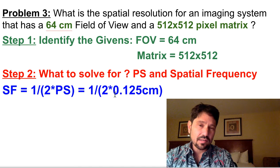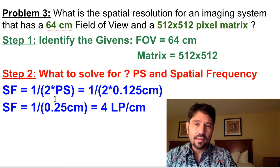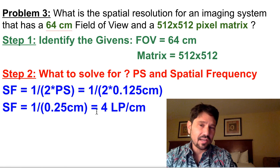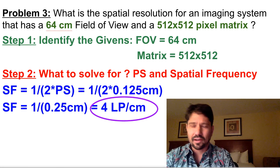So we'll put in 1 over 2 times 0.125 centimeters equals 1 over 0.25 centimeters. Turns out to be 4 line pairs per centimeter. And we'll make it very obvious for our teachers so they can find it.